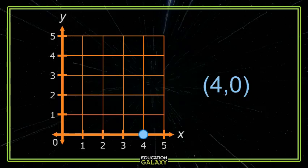But what if this point is along the y-axis? Now, it's no units to the right, but it's four units up, and this is the point 0, 4.